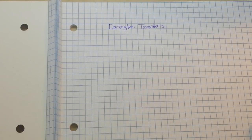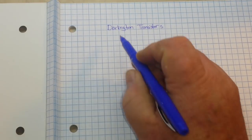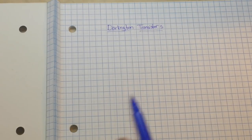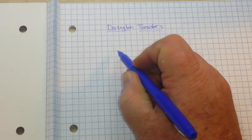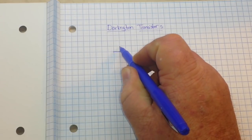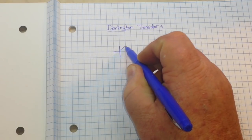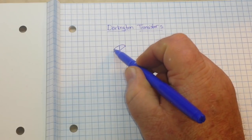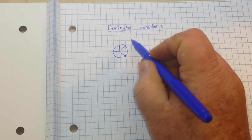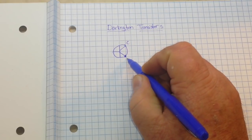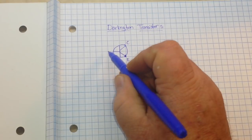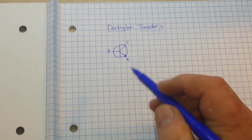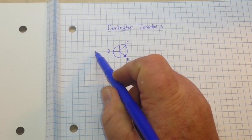Hey what's happening guys, today we're going to talk about Darlington transistors. First, we're going to do a quick recap of a standard NPN transistor. We have our collector, our emitter, and our base. When we put a small current into the base...